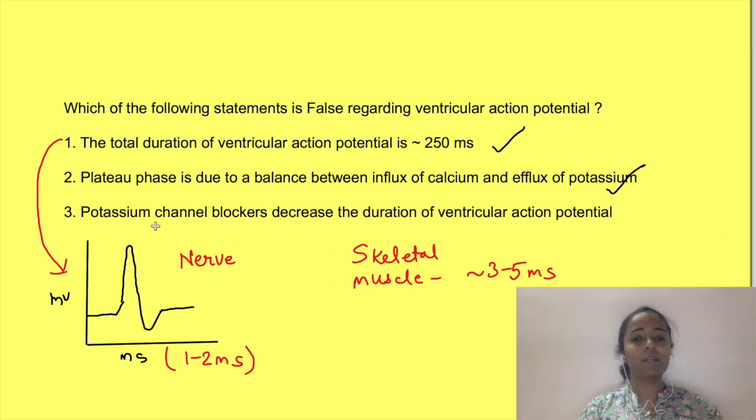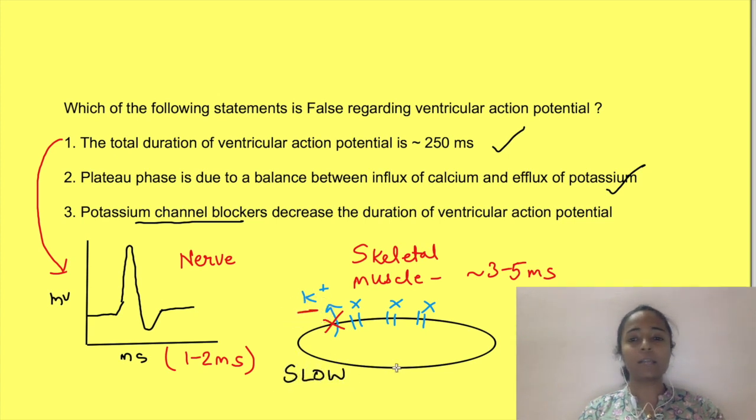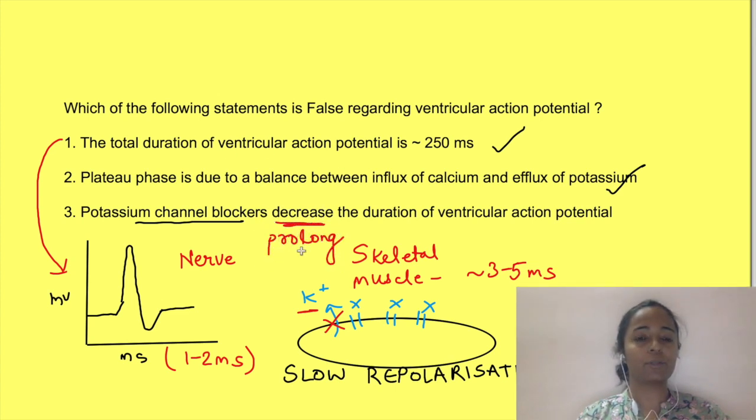Now for point 3 we have to think a little bit. See if potassium channels are blocked, potassium will not be able to go out of the cells. And since going out of potassium is responsible for repolarization, blocking the channels will slow the repolarization. So it will prolong the duration of action potential not decrease the duration of action potential.